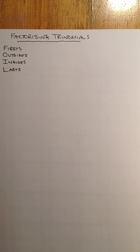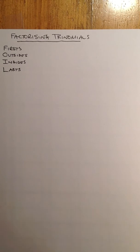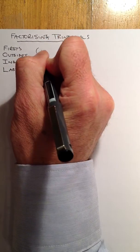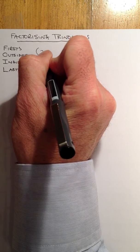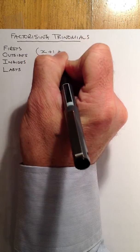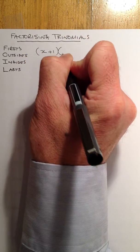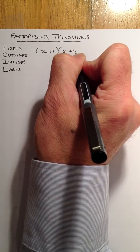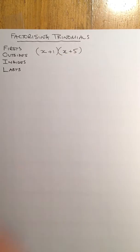Before we look at factorising trinomials, why don't we have a look at multiplying out brackets. We'll use the FOIL method. So let's multiply out x plus 1 and x plus 5.